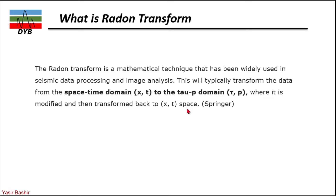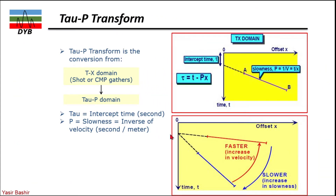Let's look at a graphical example of how it actually works. The tau-p transform converts a shot gather or CMP gather into the tau-p domain, where tau is the intercept time and p is slowness, which is the inverse of velocity — expressed in seconds per meter.